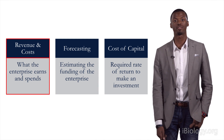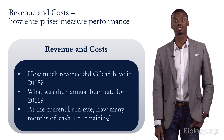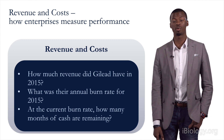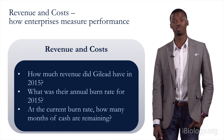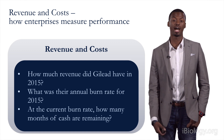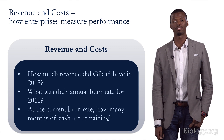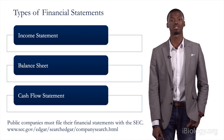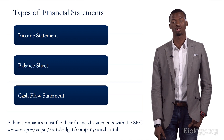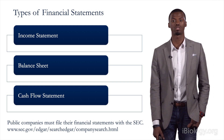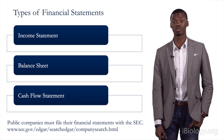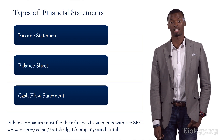Revenue and cost is how enterprises measure performance. In this section we'll talk about an overview of financial statements. There are three financial statements, which you can find online at sec.gov. Public companies are required to file these so shareholders have all the information they need to make a decision on the company. These three statements are the income statement, the balance sheet, and the cash flow statement.